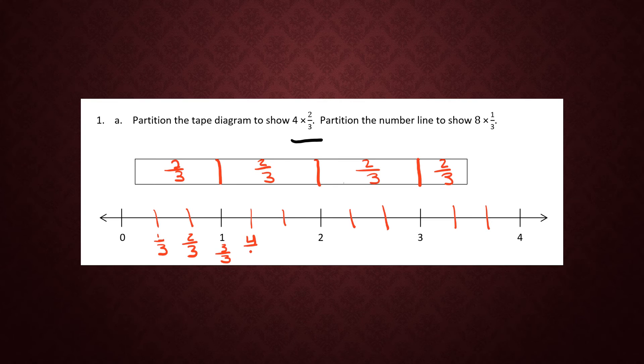4 thirds, 5 thirds, 6 thirds is 2 wholes. 7 thirds, 8 thirds, 9 thirds is our 3, and so on. We're multiplying by 8, so I need to jump 8 times.